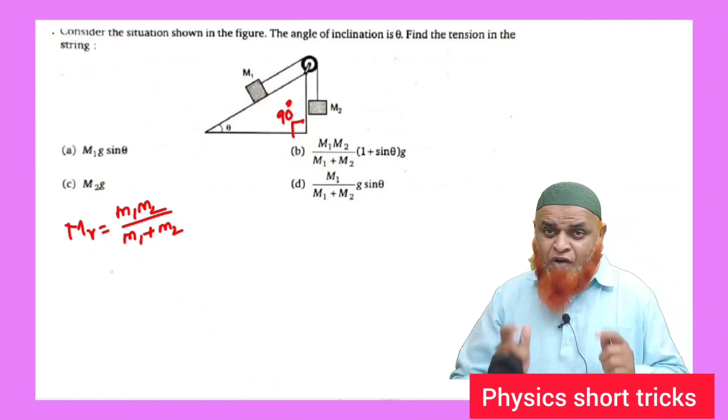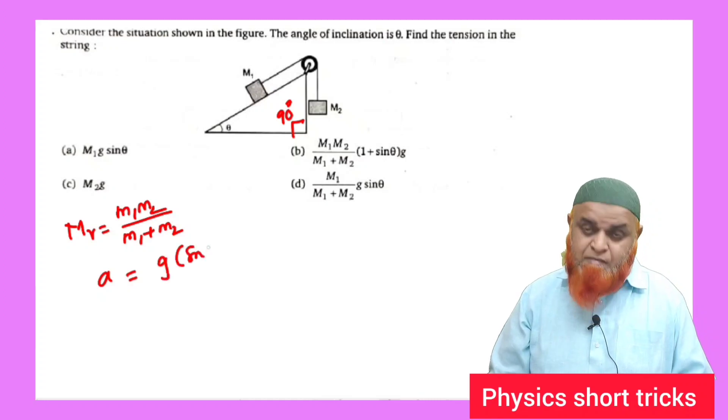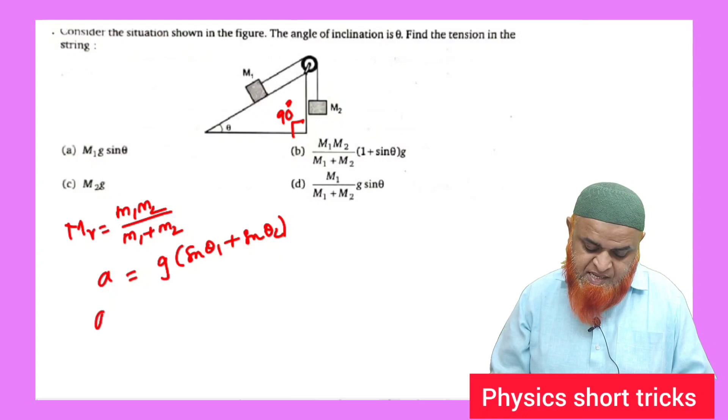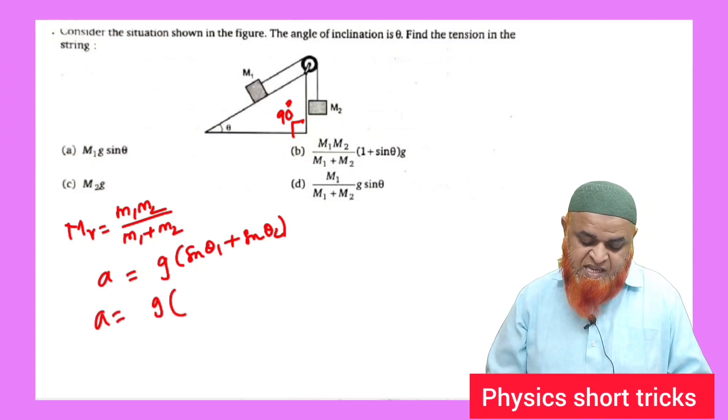Product of the masses divided by sum of the masses is the reduced mass. After that, you have to find out acceleration. Acceleration is nothing but g times sine theta 1 plus sine theta 2.